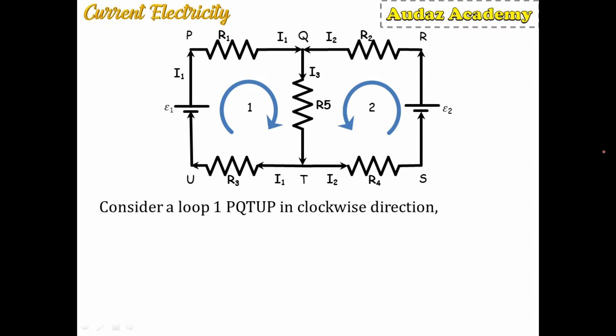Now consider this circuit diagram as an example of Kirchhoff's voltage law. It contains resistors R1, R2, R3, R4, and R5, and two power sources E1 and E2. Conventional current flow is shown with black arrows and loop tracing with blue arrows. There are two loops. The first loop we consider is PQTUP, traced in the clockwise direction — it starts and ends at P.